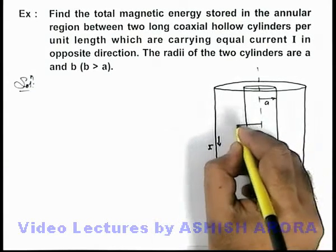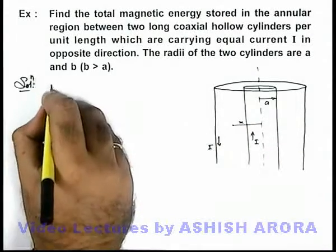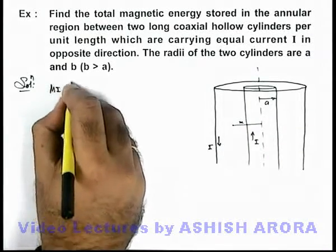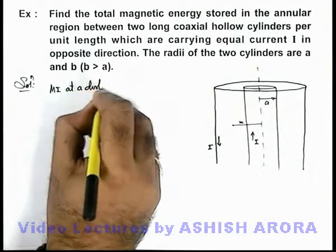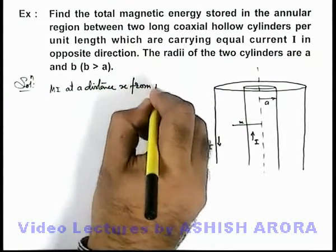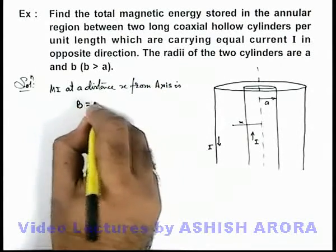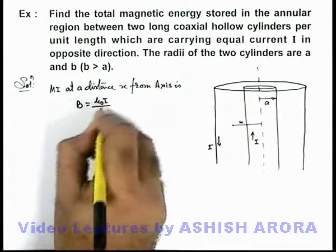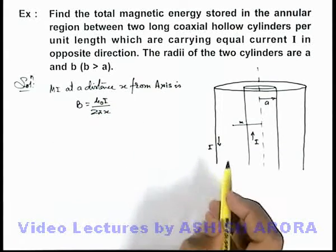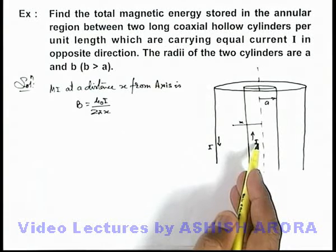So from the central line at a distance x, if we find out the magnetic induction, we can write magnetic induction at a distance x as μ₀I/(2πx), as it is outside a hollow cylinder which carries a current I.